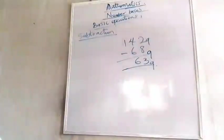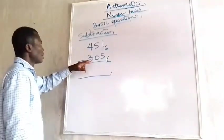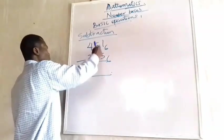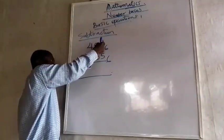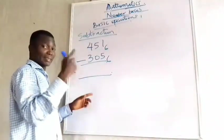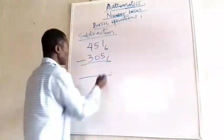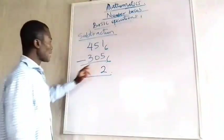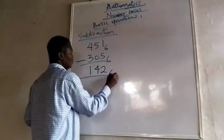Let's look at another example: 4516 minus 305 base 6. Starting right: 5 from 1 is difficult, so I borrow — in base 6, that borrowed 1 is 6. So 6 plus 1 is 7; 5 from 7 is 2. Next column: after borrowing, 0 from 4 leaves 4. Then 3 from the remaining gives the next digit. Final answer: 4210 base 6.